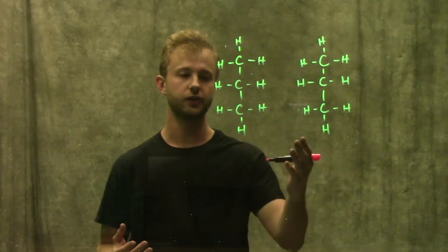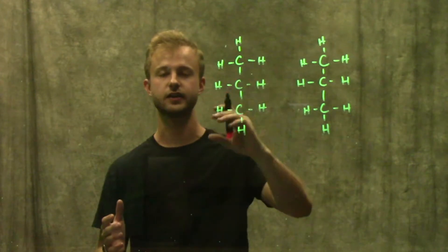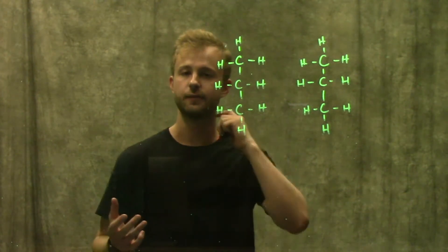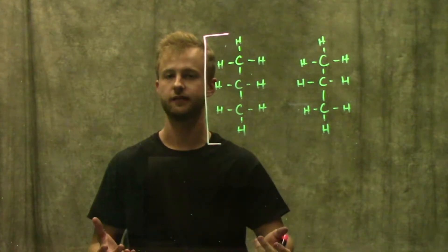But at the same time, these two molecules have their electrons moving randomly around each atom. So at any given time, we could have the electrons get randomly accumulated on one side of the molecule.